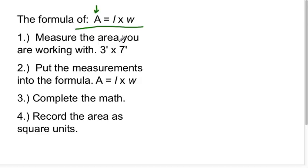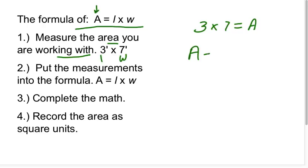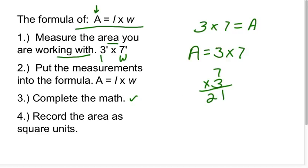Here are the steps you would follow. First, you measure to find the length and the width. In this case, we have 3 feet by 7 feet. We put the measurements into the formula: area equals 3 multiplied by 7. Then we complete the math — 3 times 7 equals 21. We've completed the math and now we record the square unit, so we have 21 square feet. That is how we find area using the formula.